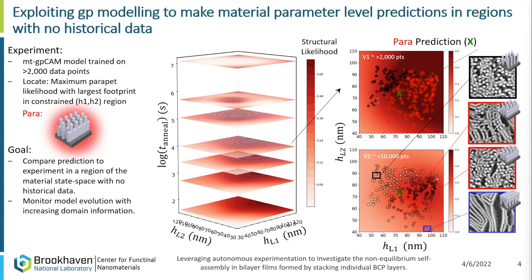Even when you start to gather more data and refine the models, the shape of the model changes — you can see that in the version trained on over 10,000 data points — but the prediction made at 2,000 data points is still fairly close to where we expect to find the aqueduct morphology, shown by the green X. To the right you can see the densely red region — that's where we find really, really rich parapet morphologies.